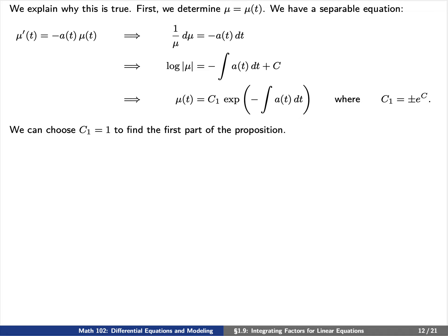Let's explain why this proposition is true. First, we're going to determine this function mu of t. The idea is that we have a separable equation: mu-prime equals negative a of t times mu. So let's divide both sides by mu and multiply both sides by dt. We find 1 over mu d mu equals negative a of t dt. We can now integrate both sides and then exponentiate to undo the logarithm to find that mu of t equals a constant c1 times the exponential of negative the integral of a of t dt. Since this constant c1 is arbitrary, let's choose it to be 1 for now.